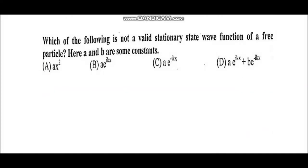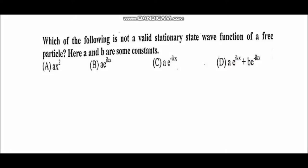Next question: which of the following is not a valid stationary state wave function of a free particle? A wave function must have a finite value. Out of the four options, three have finite values. But the first wave function, Ax², is not finite because it goes to infinity as x approaches plus or minus infinity. It does not obey the properties of a valid wave function. The answer is option A.